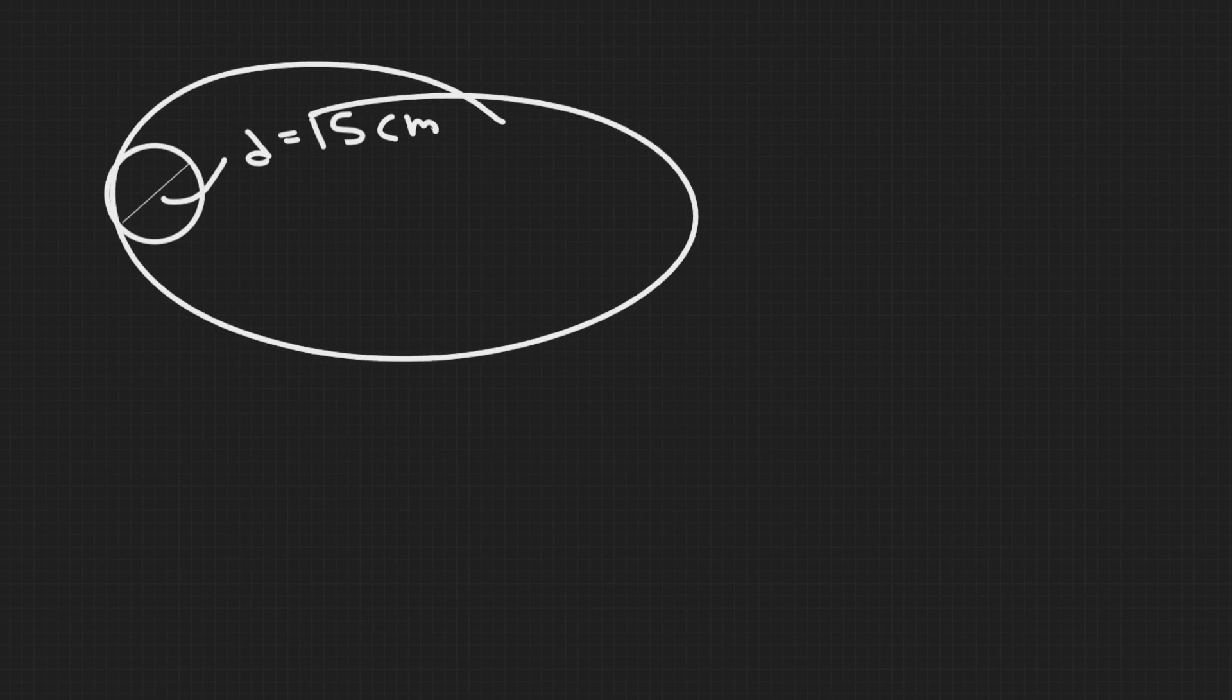The first thing I always like to do is draw what's going on. So essentially we have this aluminum ball, we're given the diameter of it is 15 centimeters. And we're also given a bunch of other information, so let's go ahead and write that down.